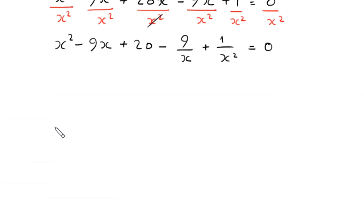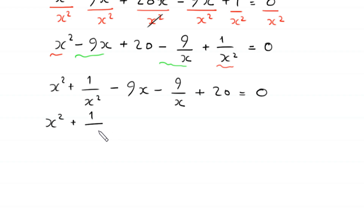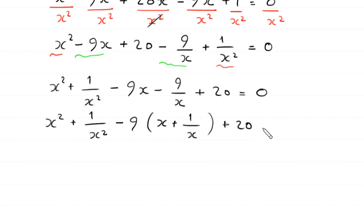Now we combine like terms. We group x squared with 1 over x squared, and negative 9x with negative 9 over x. This becomes: x squared plus 1 over x squared, minus 9 times (x plus 1 over x), plus 20, equal to 0. From the second group we factor out negative 9, giving negative 9 times (x plus 1 over x).